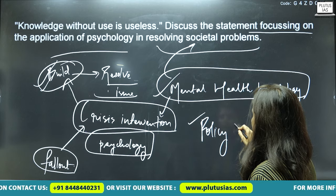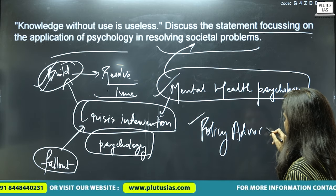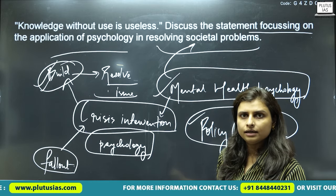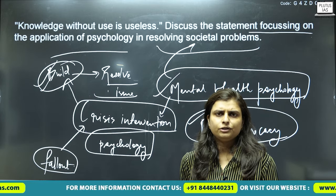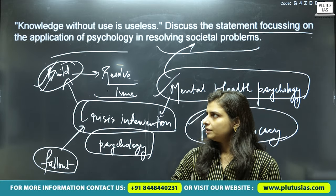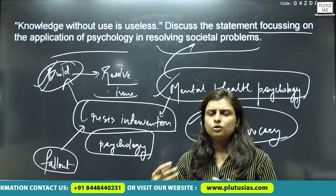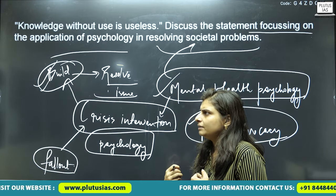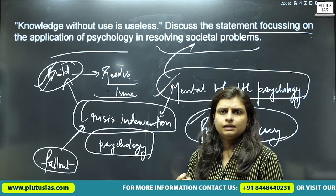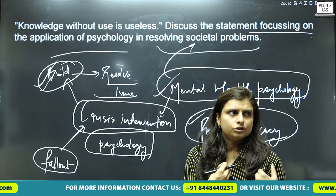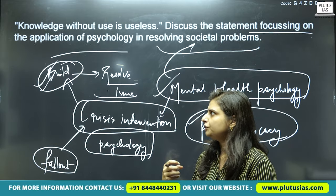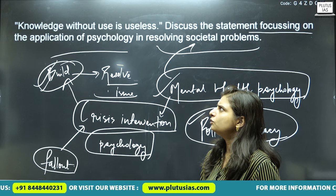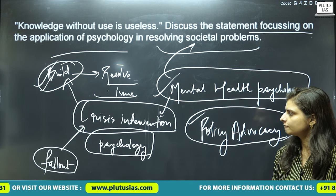There are multiple things you can write here. Keep relating your answer to relevant psychologists — for example, Albert Bandura, Daniel Goleman, Martin Seligman, and social theory. Linking your answers to these theorists will help you sail through this paper.